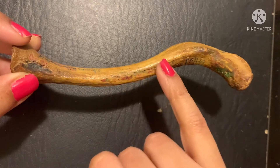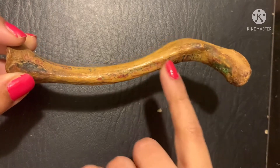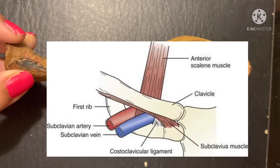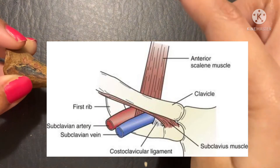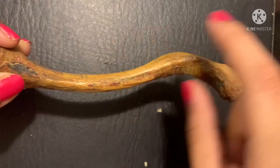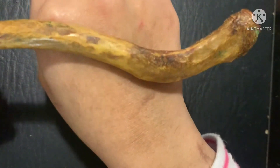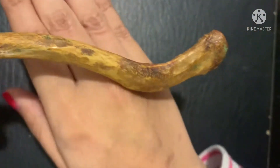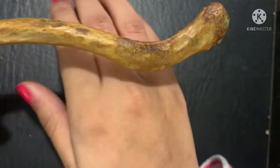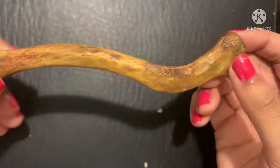The subclavius muscle acts as a cushion for the subclavian vessels, which are located between the first rib and the inferior surface of the clavicle. So the subclavius muscle serves as a protective cushion on the inferior surface.